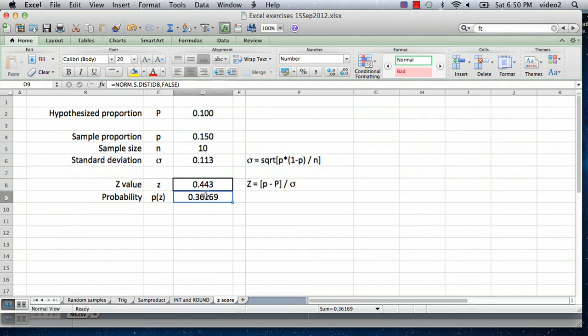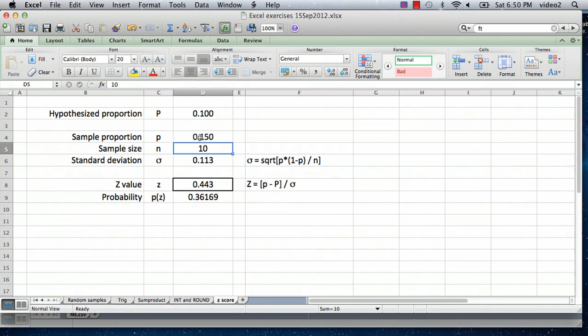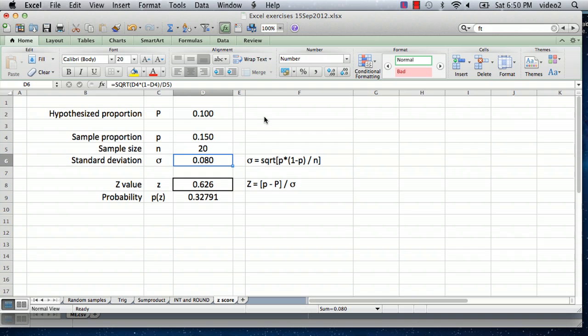Now let's just see what happens when we change some of the different numbers. Let's say we take a larger sample size, but we're still getting that 15% number compared to our assumed hypothesized proportion of 0.1. Let's double the sample size and see what happens. We type in 20 instead of 10. The z value goes up. The probability goes up.